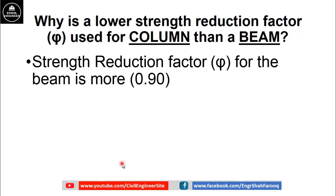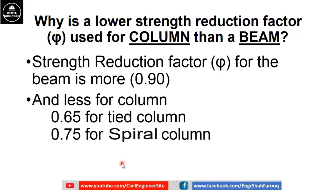Due to these reasons, the strength reduction factor φ for beams is kept higher, generally at 0.90, and for columns it is kept lower — 0.65 for tied columns and 0.75 for spiral columns. The reason for this lower value is that the column failure is brittle and the beam failure is ductile.